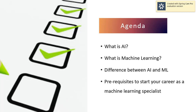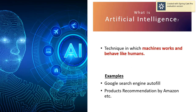Okay, so let's start. What is AI? AI is the technique to make machines walk and behave like humans. It is the art of making machines mimic the behavior of human beings.